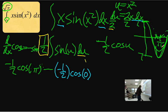So cosine of pi is negative one. So then we'd have negative one half times negative one. Well, that's just going to be one half. So you have one half minus this negative one half cosine of zero. Cosine of zero is one.